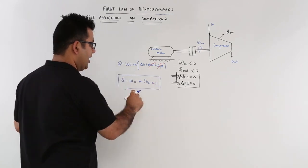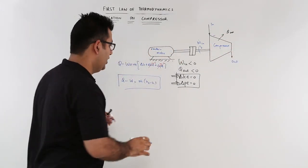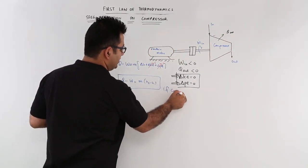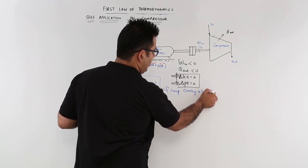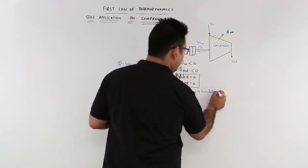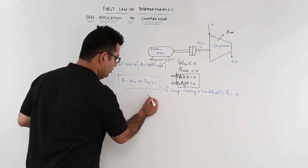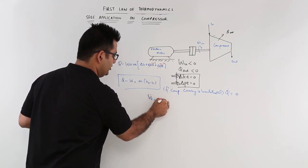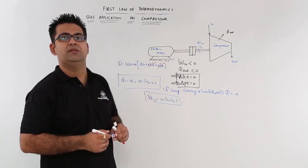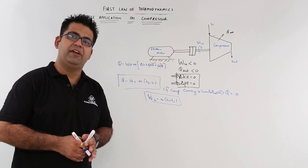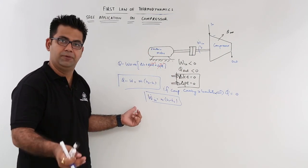And even if you have some insulation around this compressor, if the compressor casing is insulated, then the heat flow also becomes zero. So the work input is basically only M dot into H1 minus H2. So the enthalpy difference between the inlet and the outlet states is the amount of work you have to input.